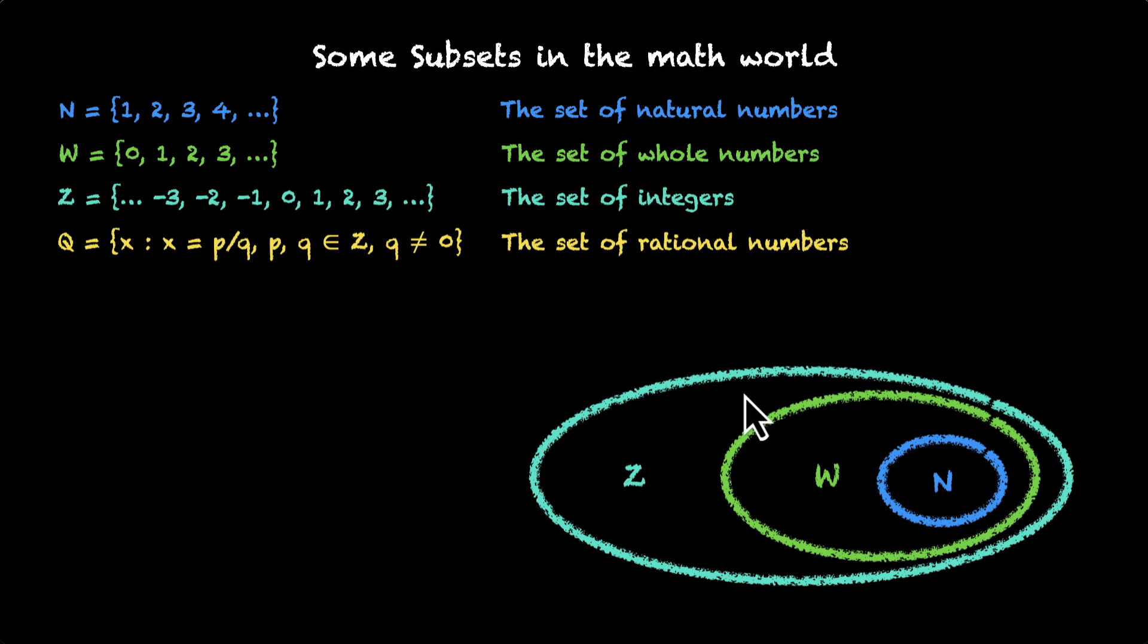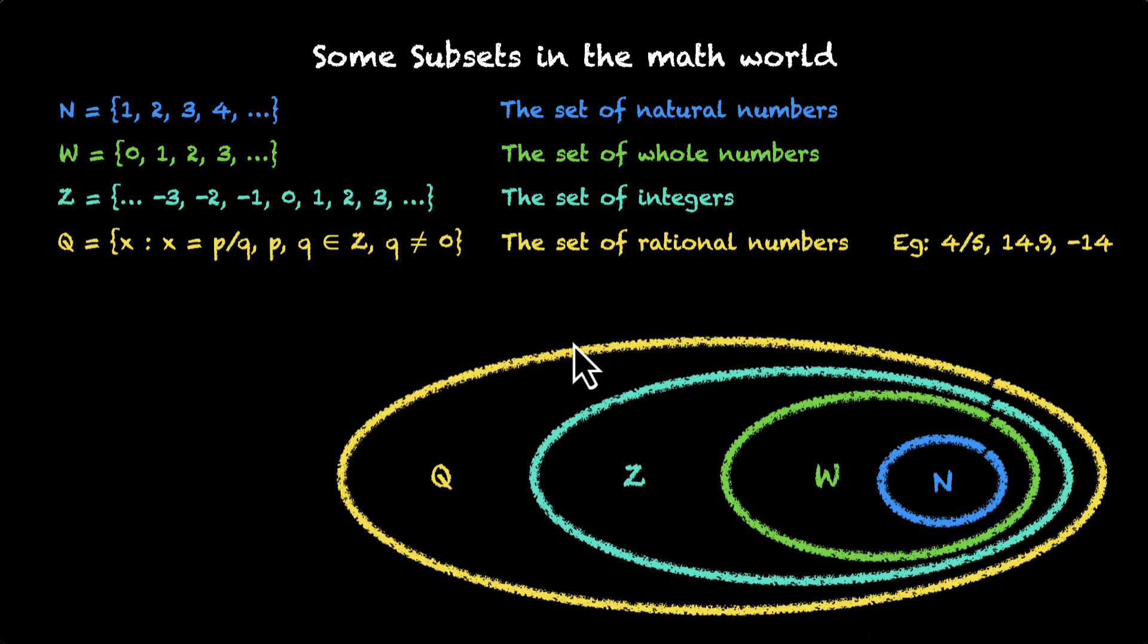Which means if you're visualizing it, this is what we'll get: q contains everything that we have covered so far. All the things that we've written as integers, whole numbers and natural numbers, all of them can be written as fractions as well. Okay, let's continue.